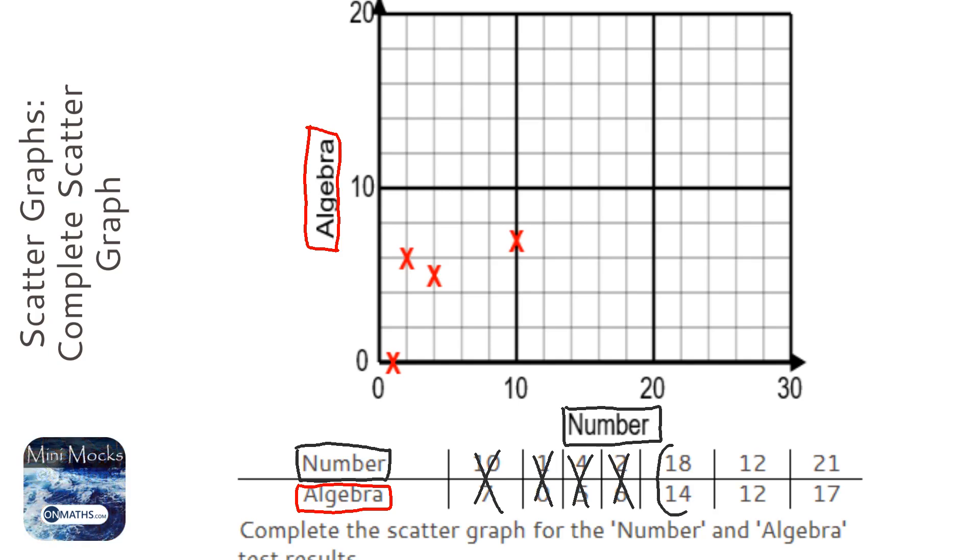It's 18 for Number, so let's just check the scale. It seems to be going up in twos - that's 12, 14, 16, 18, and then 20. So 18 would be here. And 14 for Algebra, so the scale there is going up in twos. 14 would be here, so we're just going to put a cross at 18, 14, which would be there.